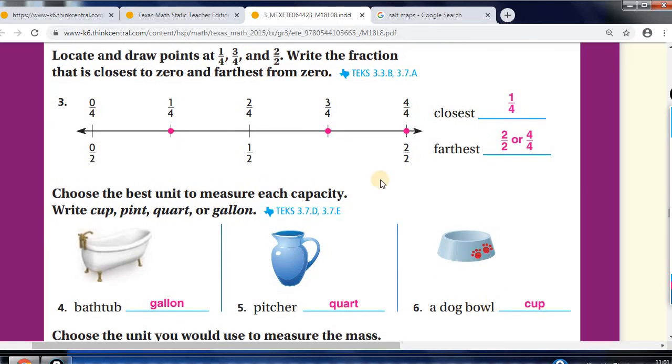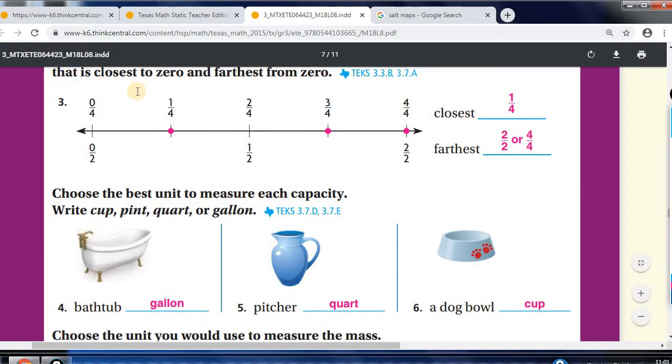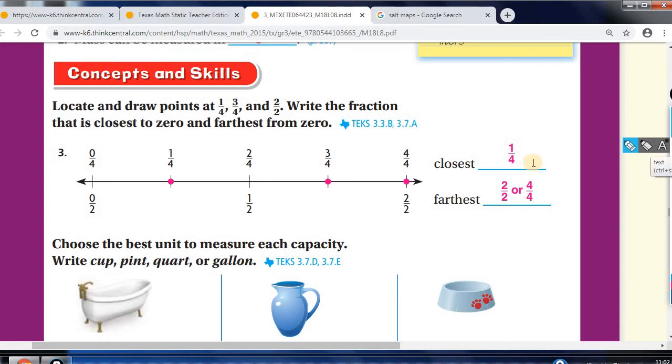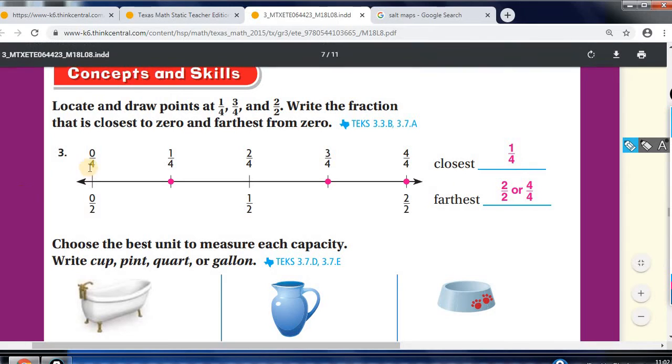We're going back to the fractions in our number line, and it's asking you to mark 1 quarter, 3 fourths, and 2 over 2, which is a whole. And then it asks you which is the closest to 0, and 0 is here. 1 quarter is the closest to 0. Which one is the farthest from 0? So, it will be 4 and 2 over 2. So, once you plot these, you are able to answer these. For the farthest, it could be this one or this one.